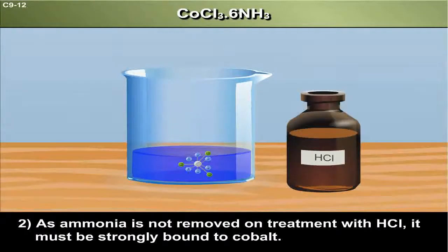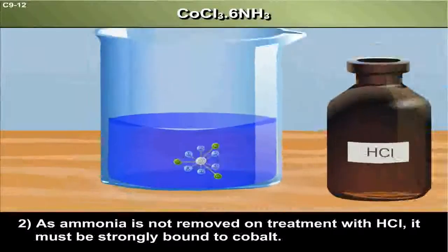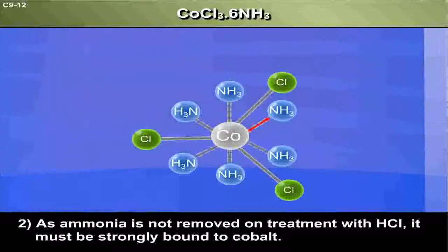Point 2: As ammonia is not removed on treatment with HCl, it must be strongly bound to cobalt.